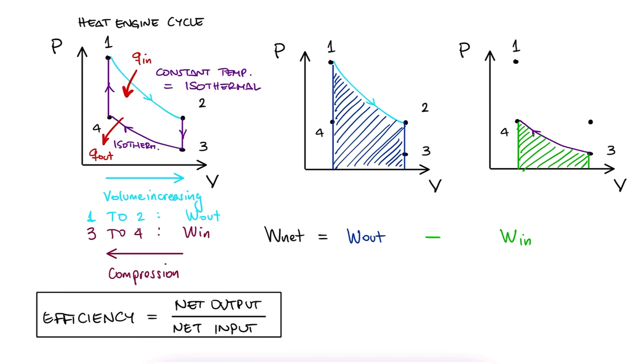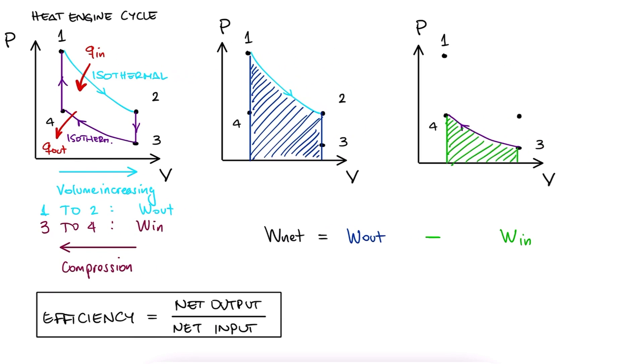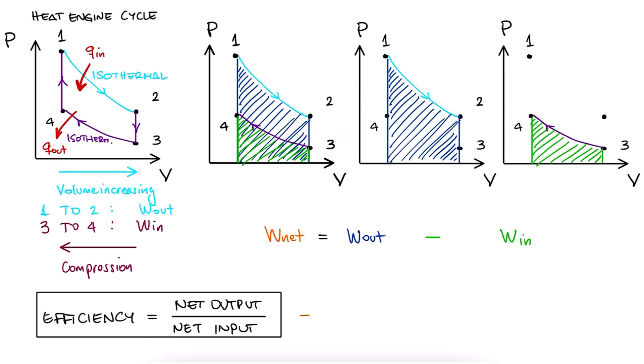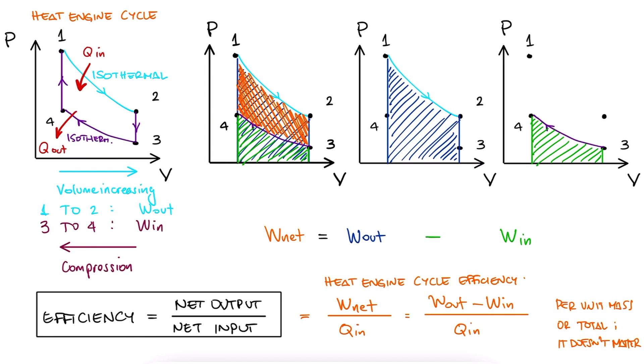The net output is what we can use as energy from our engine. In the case of this heat engine, the net work we get from it is the area inside the process path, or in other words, w out minus w in. The net input in this case would be the heat transfer coming in, q in. This is due to the waste heat that is coming out of the system, and that is a direct consequence of the second law of thermodynamics that we will learn about in a later lecture. Link below if you're interested now.